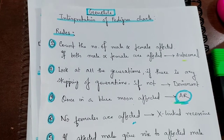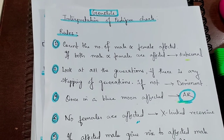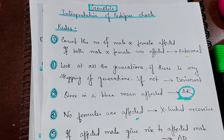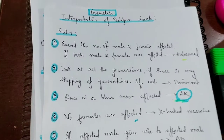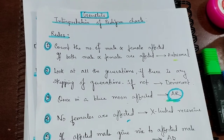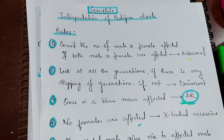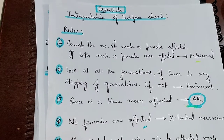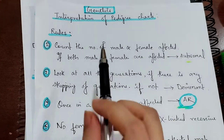Hi everyone. This video is about a very important topic in genetics: interpretation of pedigree charts. This is a very frequently asked question in the task exam. If you look through the recalls or any sample paper, you will find at least one question where they put up a pedigree chart and ask you to interpret the pattern of inheritance. There are certain rules you need to follow, so let's check them out.